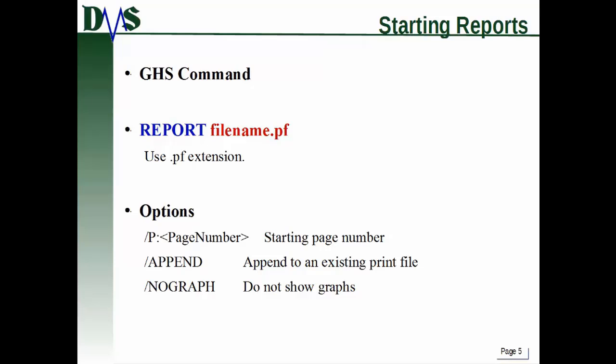So how do you start a report? In GHS the command is 'report' and then whatever you want the name of your report to be. The report is the command and then this is your file name .pf. You don't have to use .pf, but that's the extension commonly used with reports. There are a couple of options that go with that command. Number one is the -p option — that's the starting page number. That's pretty important because if you ever put this into a run file and run it multiple times, if you don't specify the -p option it will just add on to your existing report, or if you put the -p option in it will overwrite from whatever your starting page number was. If you do want it to just add on to the report, then you use the append option.